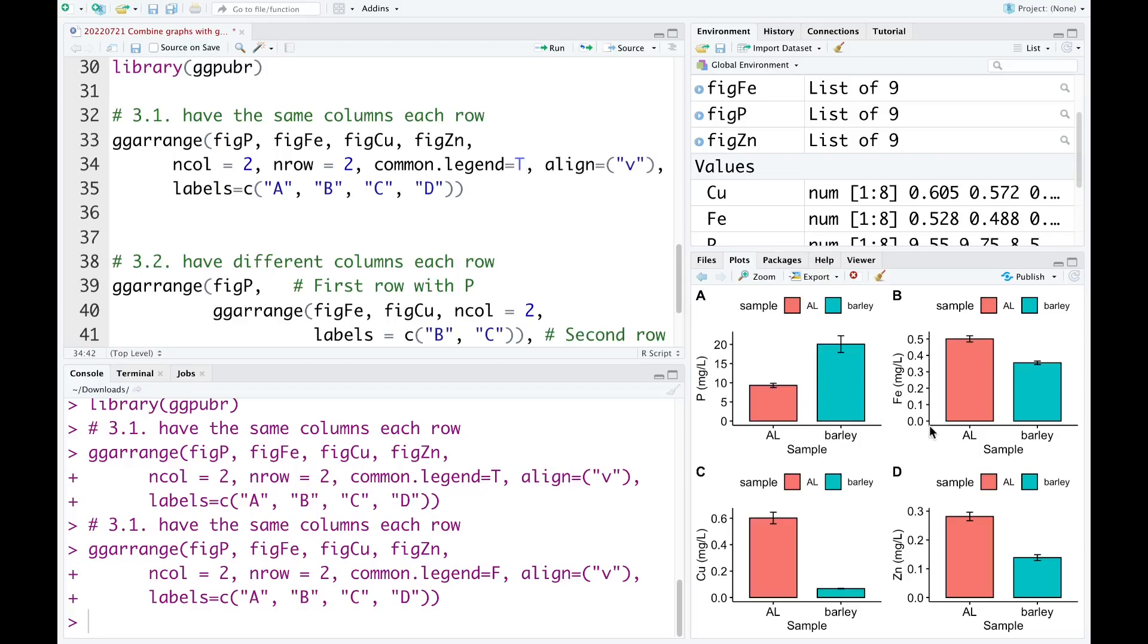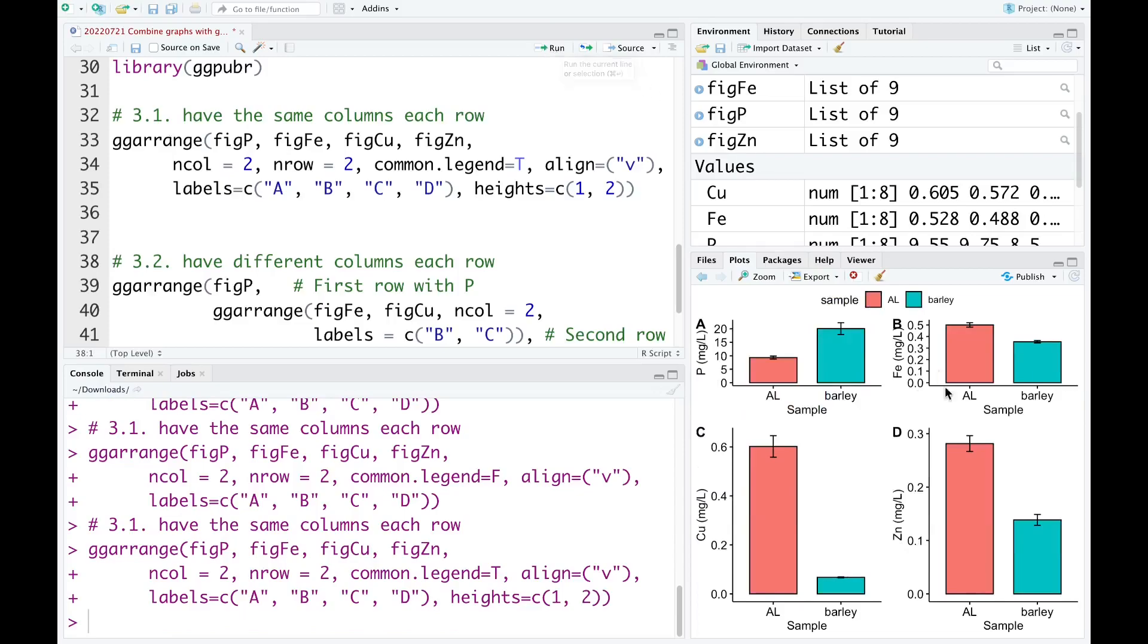You can also adjust the height of the row or the width of the column. For example, if you want the first row shorter than the second one, you use the code heights = c. For example, here I select 1 and 2. Now I hit run and we see. As you can see now, the first row is much shorter than the second row.